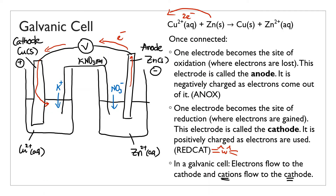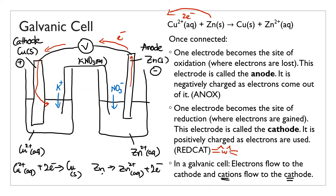The half equations are: Cu2+ + 2e- → Cu at the cathode, and Zn → Zn2+ + 2e- at the anode. If you run this cell for a long period of time, the cathode gets bigger because you're producing more copper, and the anode gets smaller because you're dissolving zinc into zinc ions.